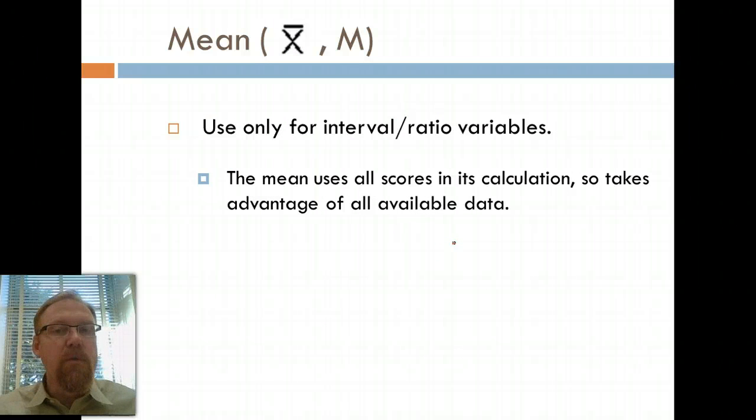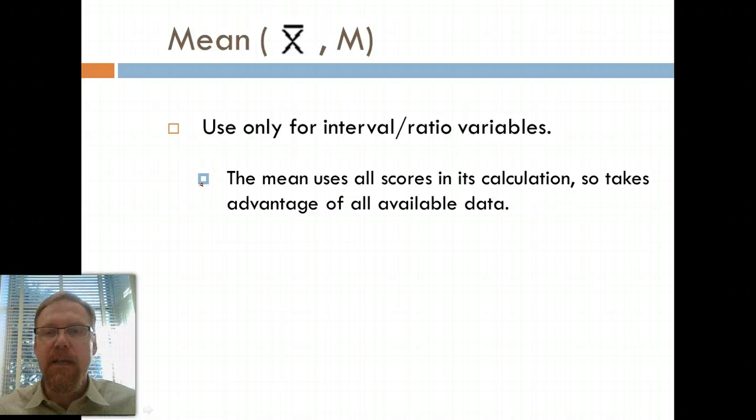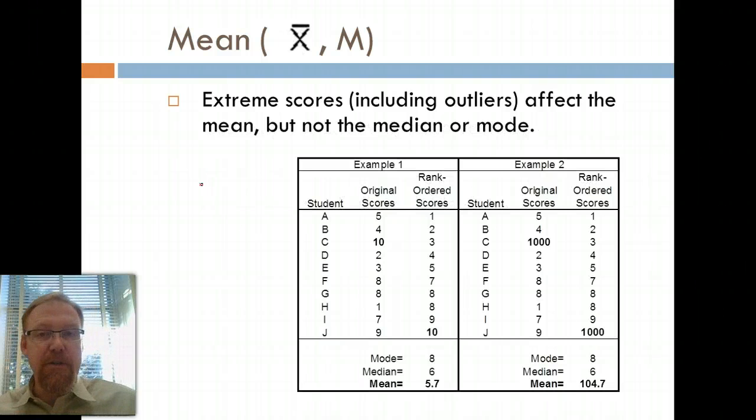We tend to use it only for interval ratio variables with the exception of dichotomous nominal variables, like I showed you earlier, especially if they are coded zero and one. But that is unique. And so it's best to remember, use the mean for interval ratio variables. The mean will use all the scores in its calculation, so it takes advantage of all the available data. Now that's a good thing for the most part, unless you have some outliers. So extreme scores, including outliers, affect the mean, but not the median or the mode.